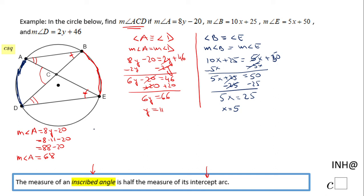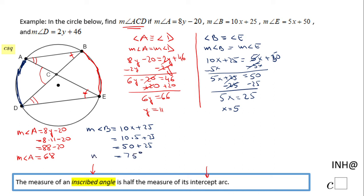Using x equals 5, we find the measure of angle B. The expression for angle B is 10x plus 25. Plugging in 5 gives 10 times 5 plus 25, which is 50 plus 25, equal to 75 degrees.